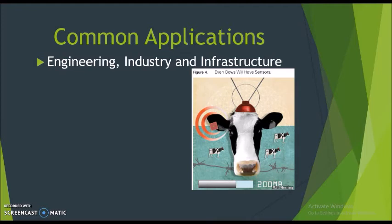Engineering, industry, and infrastructure: applications of IoT in these areas include improving production, marketing, service delivery, and safety. IoT provides a strong means of monitoring various processes, and real-life transparency creates greater visibility for improvement. The deep level of control afforded by IoT allows rapid action on opportunities such as obvious customer needs, non-conforming products, equipment malfunctions, and distribution network problems.